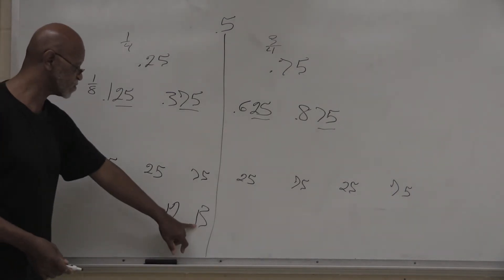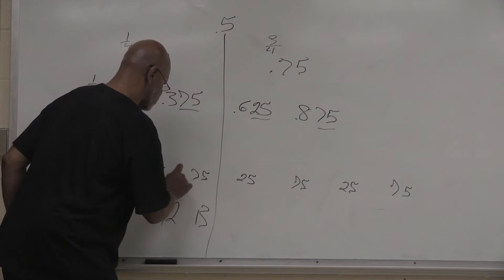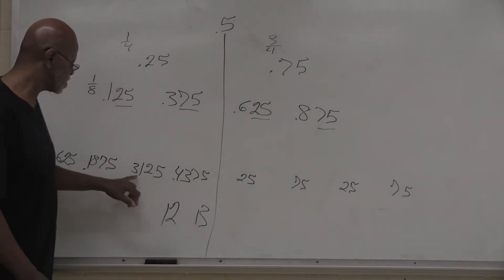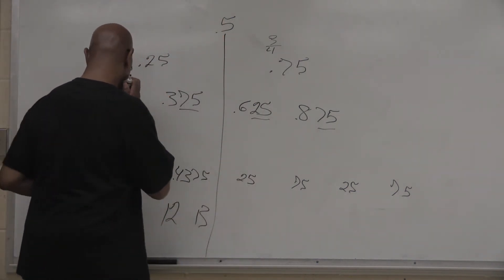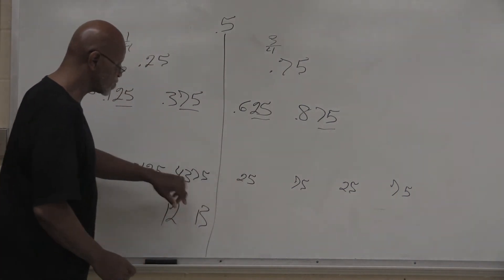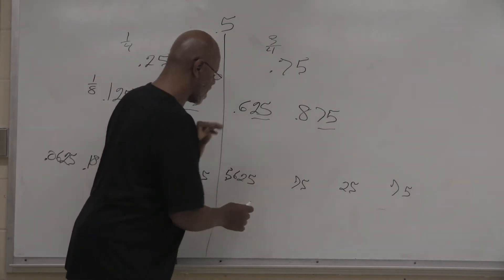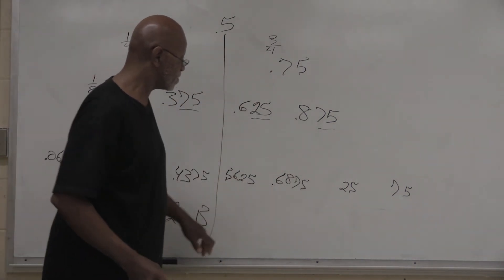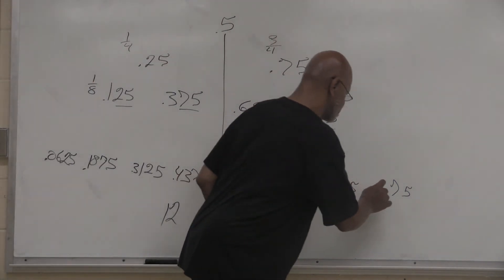And 18 plus 13 gives us 31. And 31 plus 12 gives us 43. And we still have the 2575 2575 pattern. 06 plus 12 is 18. 18 plus 13 gives us 31. And 31 plus 12 gives us 43. So on this side of the half inch, so we are in sixteenths. So this would be 43 plus 13 gives us 56. And 56 plus 12 actually gives us 68. And then 68 plus 13 gives us 81. And then 81 plus 12 gives us 93.